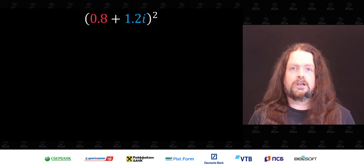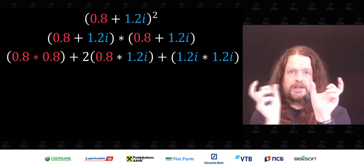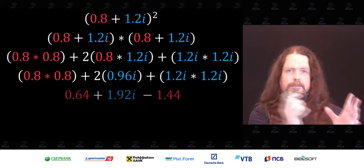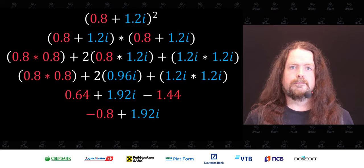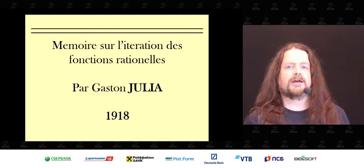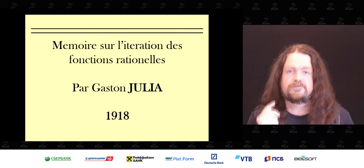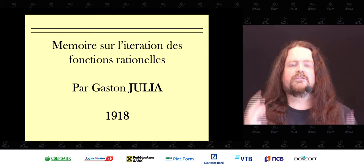We can do arithmetic with complex numbers. We take 0.8 plus 1.2i, square it, expand the brackets, and multiply all components by each other — the only rule being that i times i gives a negative result. We collect the real parts and imaginary parts and crunch the whole thing down. The first people to really study this were two French mathematicians working around 1910 to 1911: Gaston Julia and Pierre Fatou, who published their 1918 paper, 'Mémoire sur l'itération des fonctions rationnelles.'